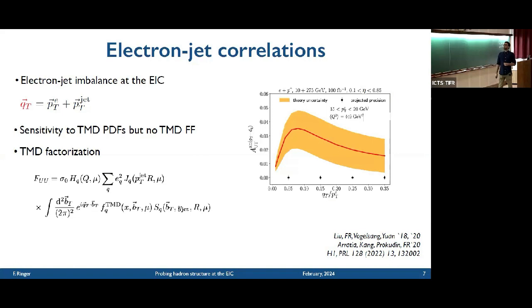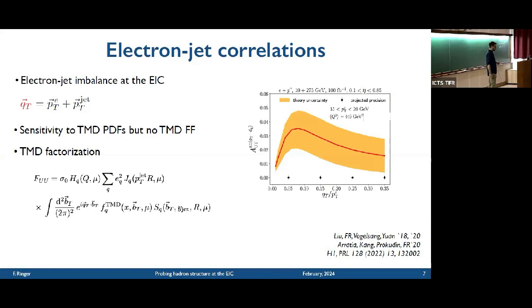Here's an example of a calculation we did, specifically for the Sivers function at the EIC. You can see here the relatively large theory uncertainty that we currently have, plotted as a function of this transverse momentum Qt. You can also see the size of the statistical uncertainty we expect to see at the EIC, which is significantly smaller than the uncertainty we currently have on the Sivers function. This is in the laboratory frame, but we can do very similar things also in the Breit frame, which gives us handles on gluon PDFs, the gluon Sivers function, and things like that.